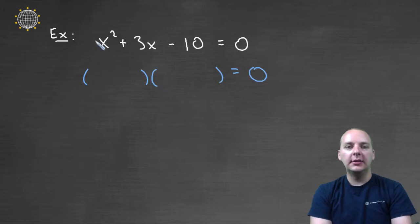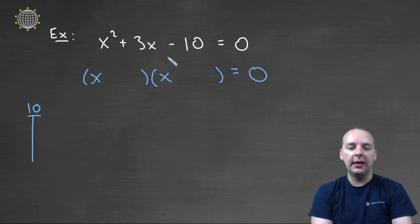Alright, we're pretty good at factoring. This has a leading coefficient of one, so I'll probably do trial and error here. I know my leading terms have to be an x and an x. And then I'm looking for something that multiplies to ten, actually negative ten, that would add to positive three.